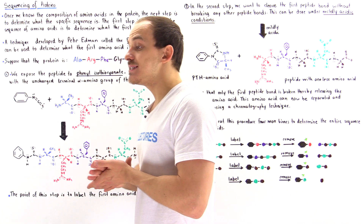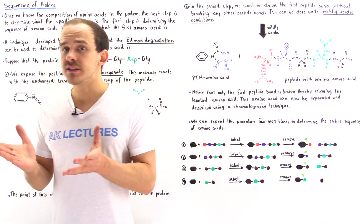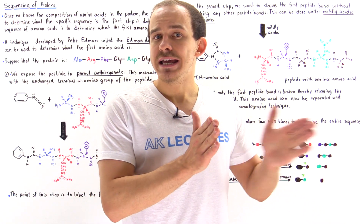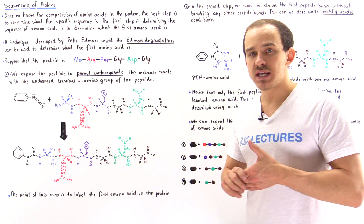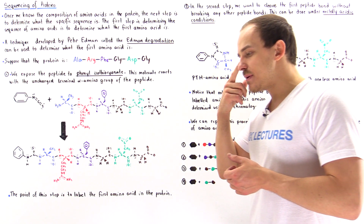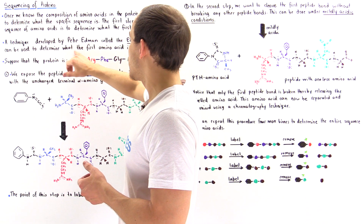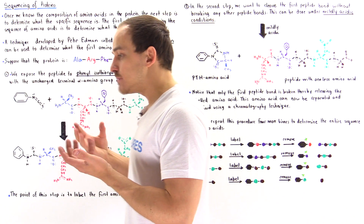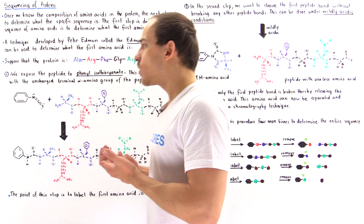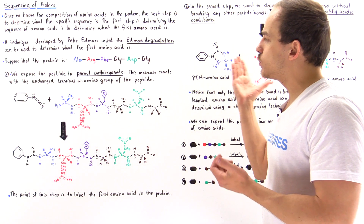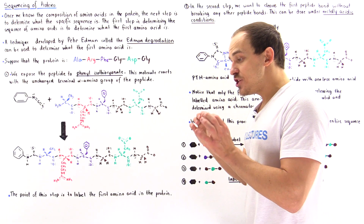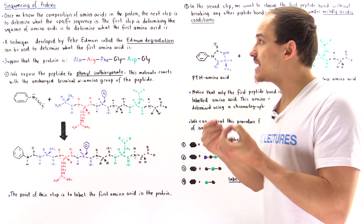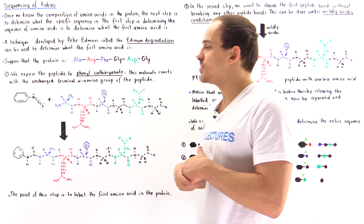The first step in sequencing our amino acids is to determine what that first amino acid is in that specific sequence. The procedure that allows us to determine what that first amino acid is is known as the Edman degradation. To demonstrate how it works, we'll begin by assuming we know the sequence — but in your actual protein, you won't know the amino acid sequence, which is exactly why you'd use the Edman degradation process.